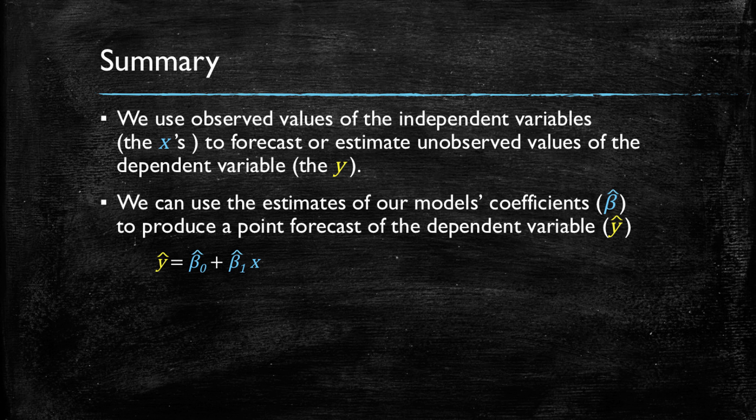Then, we can use the estimates of our coefficients, the intercept and the slope, to produce new values or estimated values of the dependent variable. And in statistical notation, we will generally use hats. In this case, β₀ hat and β₁ hat to be the estimates of our coefficients and ŷ hat to be the predicted value of our dependent variable.